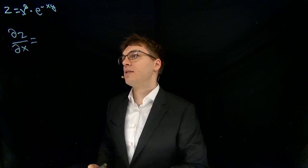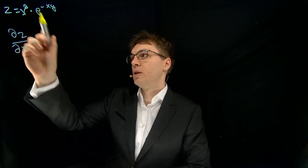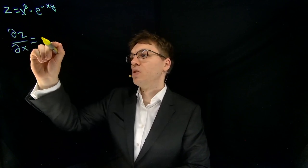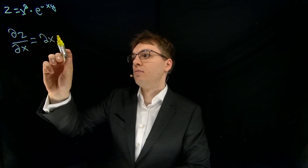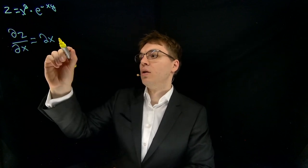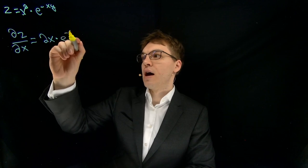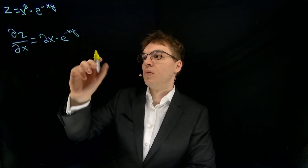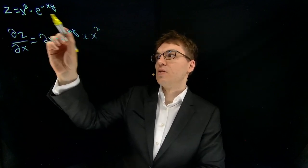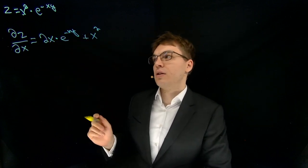So for this x squared we will take the power rule. So we decrease the exponent by one and multiply it in front. So we get 2x to the power of 2 minus 1, so 1. So we can leave it out. We multiply this with this function without deriving it. And then we need to add this one times the partial derivative of the right part. So this whole pattern here is the product rule.